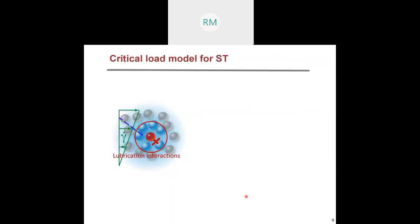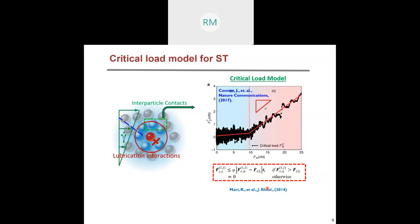For this we use a critical load model, commonly used in the literature to recover shear thickening behavior in suspensions. The idea is that the friction force will be zero if the normal force between the particles is lower than a threshold value fcl, and friction will be activated once this normal load becomes larger than the threshold value.